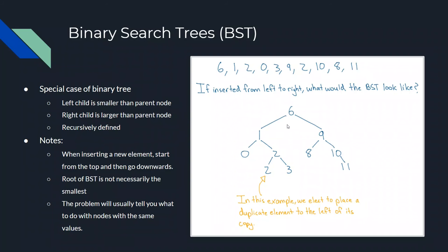Notice that the root of the binary search tree is not necessarily the smallest, because the first element we insert is the root and that might not be the smallest. We know it's not the smallest if it has a left child. For example, here we have this sequence of integers: 6, 1, 2, 0, 3, 9, 2, 10, 8, 11.